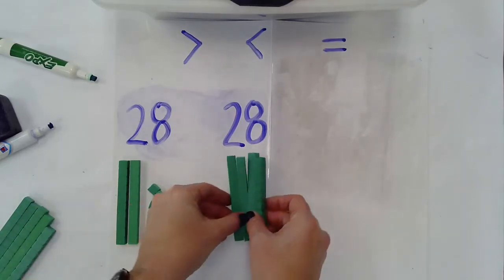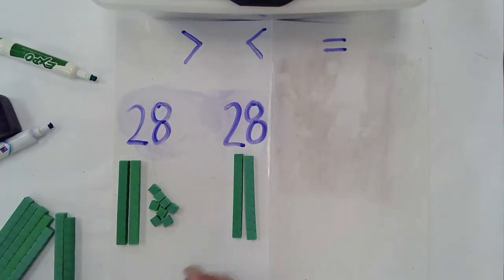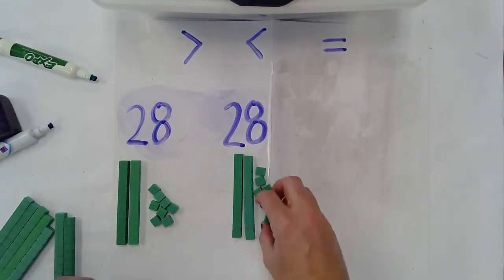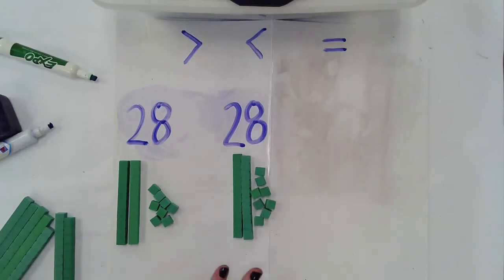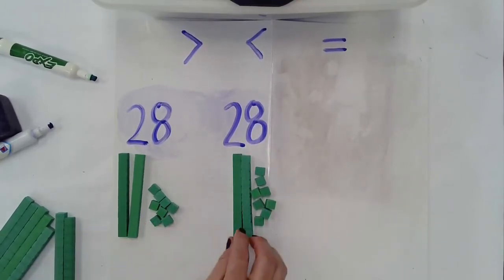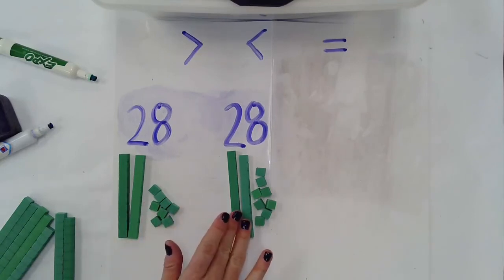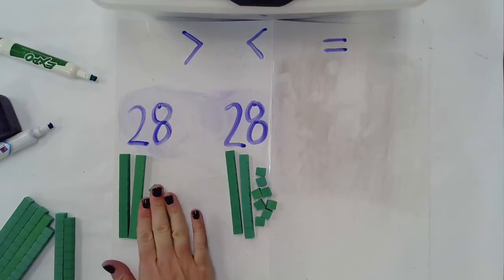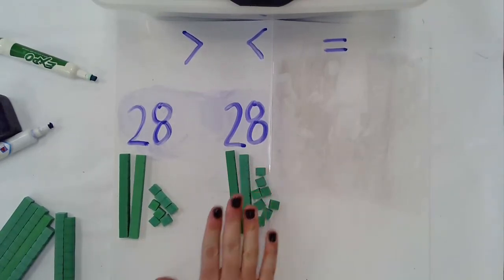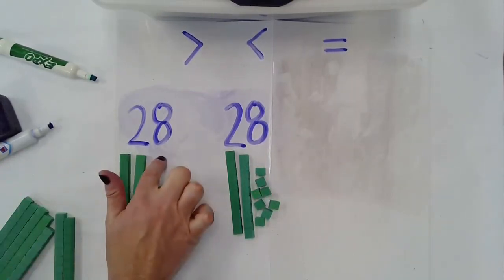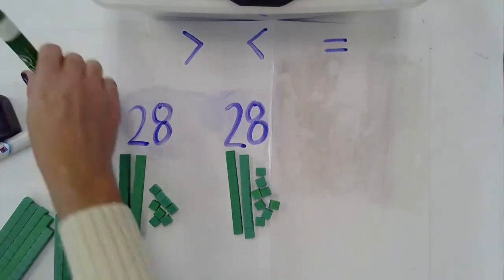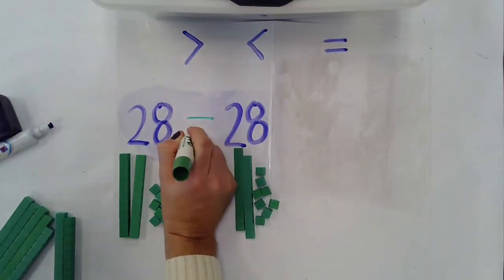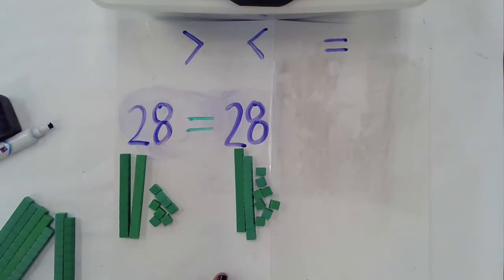So I've created with my place value blocks and I see that they both have two tens. So now I need to focus on the ones and I counted out eight blocks here and eight blocks here. So that tells me that these two numbers are equal. So when two numbers are equal, we're going to put the equal sign in between.